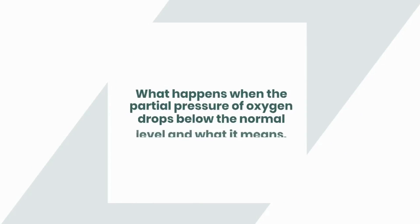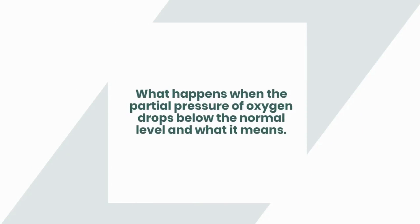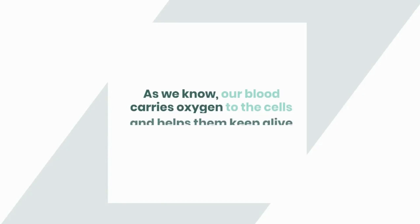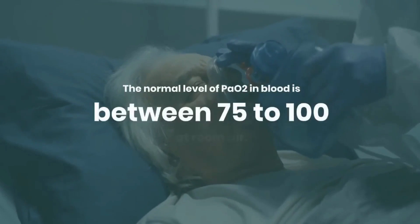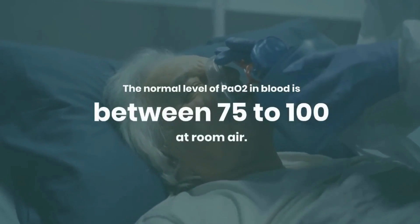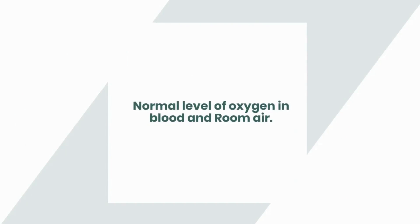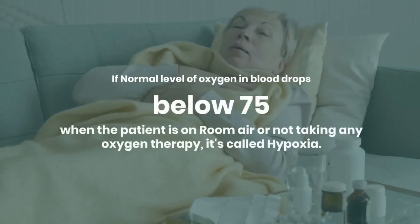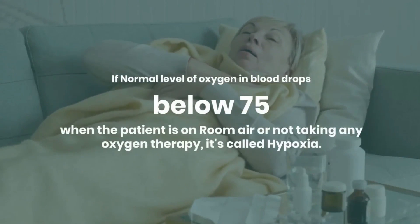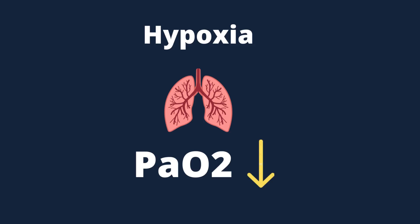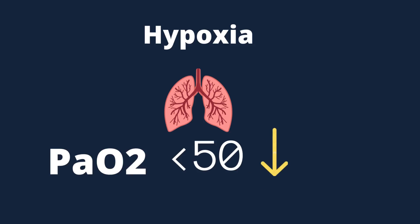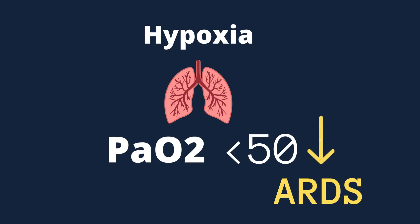What happens when the partial pressure of oxygen drops below the normal level and what does it mean? As we know, our blood carries oxygen to the cells and helps them keep alive and working. The normal level of PaO2 in the blood is between 75 to 100. If the normal level of oxygen in the blood drops below 75 when the patient is on room air or not taking any oxygen therapy, it's called hypoxia. Hypoxia is life-threatening if the PaO2 level drops below 50, as it corresponds to ARDS, or acute respiratory distress syndrome.